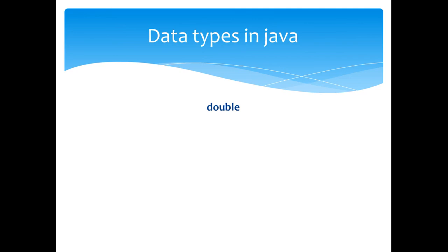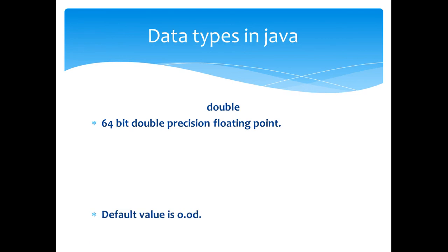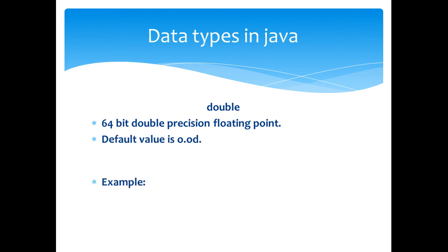The next type is the double. It is a 64-bit double precision floating point value. The default value is 0.0d. An example is shown here.